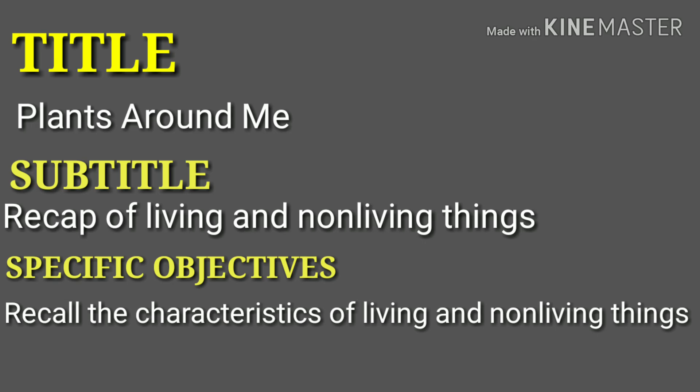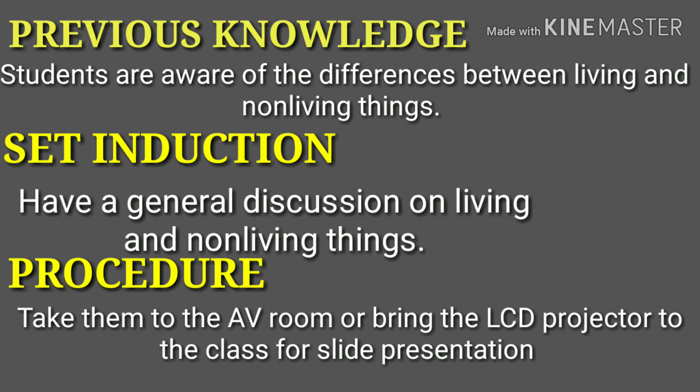To begin with, first you have to write the title: Plants Around Me. Then comes the subtitle: Recap of Living and Non-Living Things. Then the specific objectives or aim: students will be able to recall the characteristics of living and non-living things. Then previous knowledge: students are aware of the differences between living and non-living things.